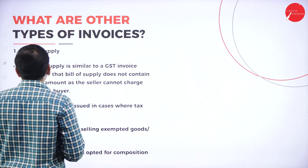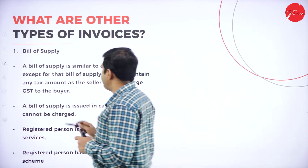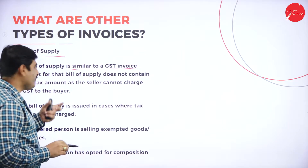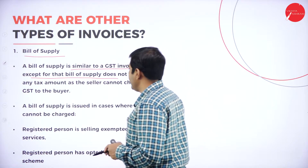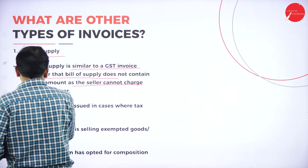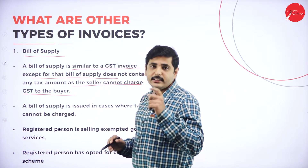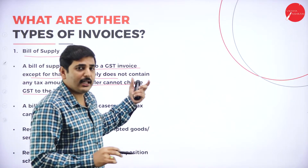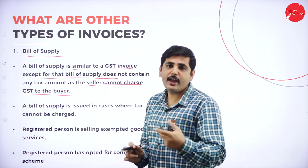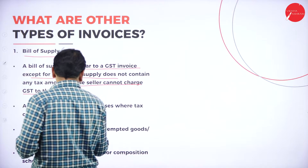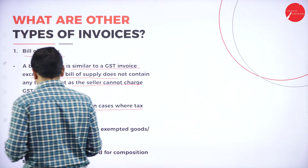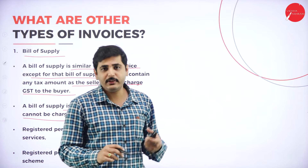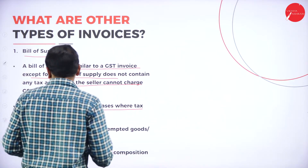What are the other types of invoice? First, bill of supply. A bill of supply is similar to a GST invoice, but unlike a GST invoice, the bill of supply does not contain any tax amount as the seller cannot charge GST to the buyer. The tax amount — how much tax is deducted, what is the liability payable to the government — that amount is not mentioned in the bill of supply. It just contains the actual price of the product. A bill of supply is issued in cases where tax cannot be charged — for goods where we cannot levy the tax.